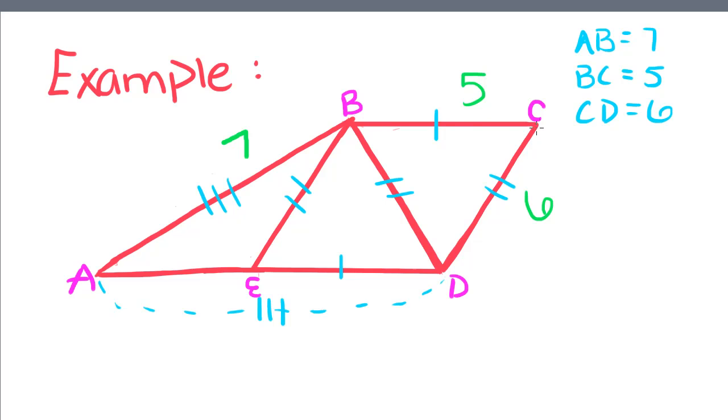Since BC is five, and BC and segment ED are congruent, marked with one tick mark, we can say that the length of ED is also equal to five.